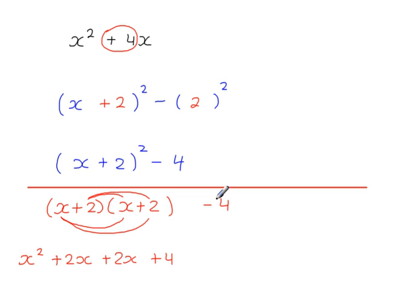There's the minus 4 from here. And as you can see, the 4 and the minus 4 are going to cancel. What have we got here then? x squared plus 2x plus 2x. That gives you plus 4x, which is the same as what we started with.